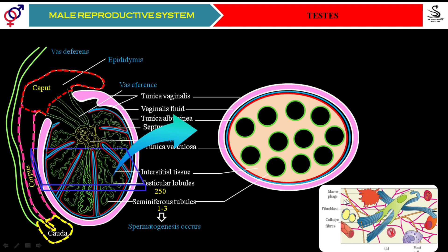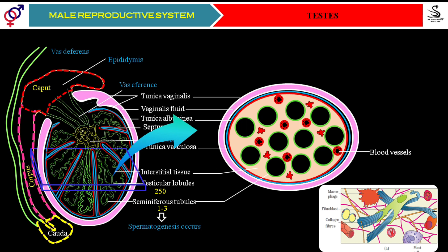The interstitial tissue contains a number of blood vessels — it is just like areolar tissue, which is loose connective tissue. You can observe blood vessels here inside the interstitial tissue. In between the blood vessels there are a number of other irregular cells. All these cells are commonly called immunocompetent cells.